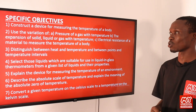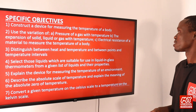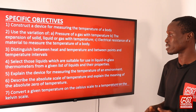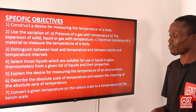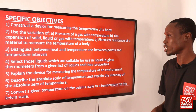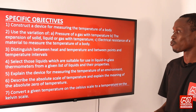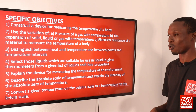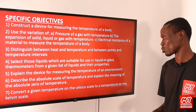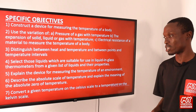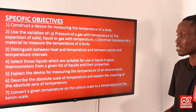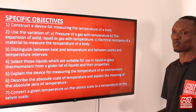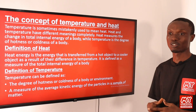Objective two: use the variation of (a) the pressure of a gas with temperature, (b) the expansion of solid, liquid, or gas with temperature, and (c) the electrical resistance of a material to measure the temperature of a body. Three: distinguish between heat and temperature and between point and temperature intervals. Four: select liquids suitable for use in liquid-in-glass thermometers from a given list. Five: explain the device for measuring the temperature of an environment. Six: describe the absolute scale of temperature and explain the meaning of absolute zero of temperature. Seven: convert a given temperature on the Celsius scale to a temperature on the Kelvin scale.